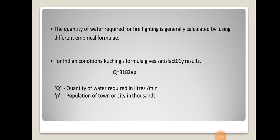There are many other empirical formulae used to calculate water required for firefighting. In Indian conditions, normally Kuchling's formula is used, which gives satisfactory results. This formula is Q = 318 × √P, where Q represents the quantity of water required in litres per minute and P represents the population of the town or city in thousands. Kuchling's formula is usually used for calculating the quantity of water required for firefighting.